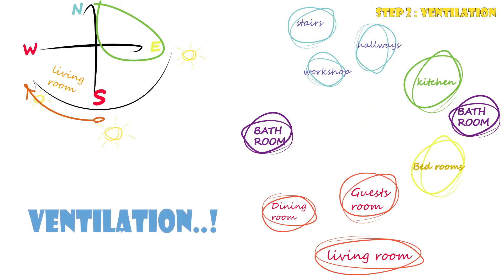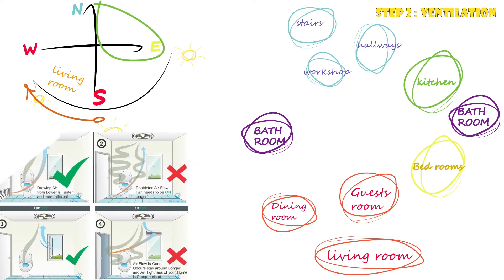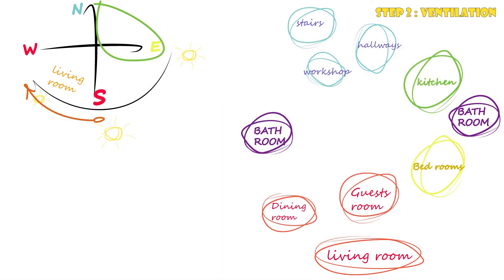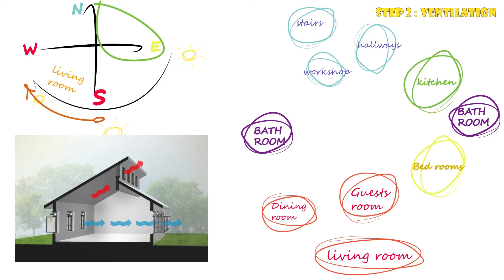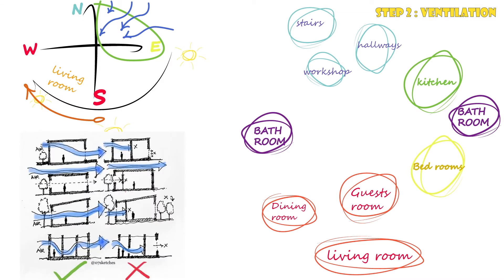Step two is ventilation — very important inside the house. First, consider the bathrooms: you must place them on the opposite side from the prevailing wind. You don't want bad smells coming into the house, so you need to know the wind's movement. The same is true for the kitchen — you don't want food smells blowing inside and lingering. You might ask: what if the wind direction and the sun direction don't match? Wind directions vary from country to country, but the sun's rays are the same everywhere.